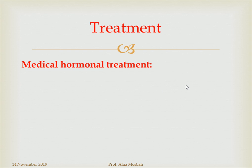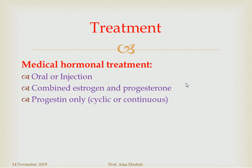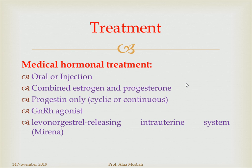Medical hormonal treatment may be given orally, by injection, or intrauterine via a contraceptive-releasing hormone device like a Mirena IUD. It can be given cyclically or continuously. Options include combined estrogen-progesterone, progesterone only, GnRH agonist, and levonorgestrel-releasing intrauterine system.